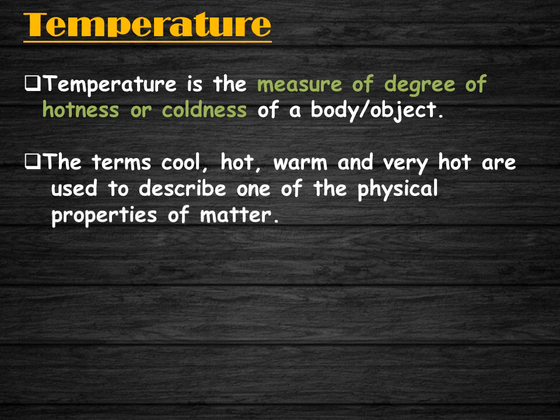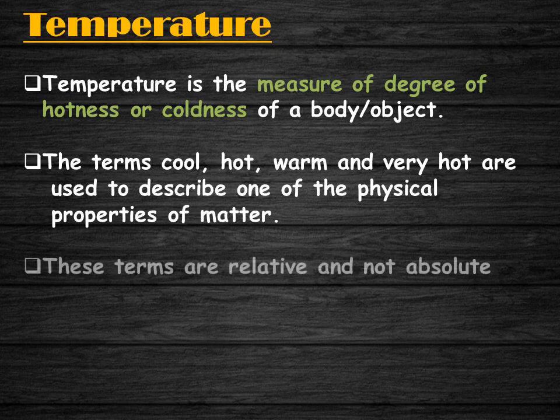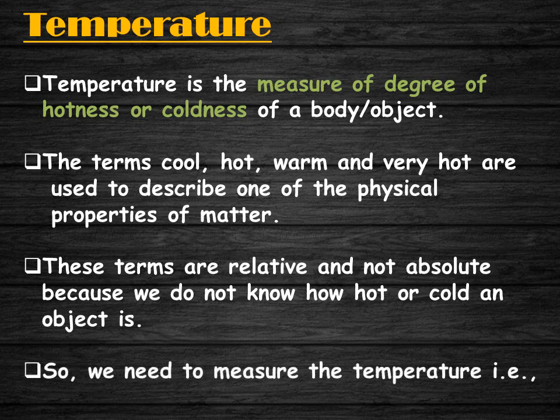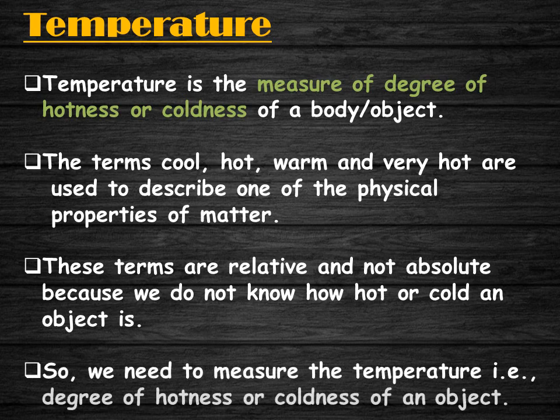The terms cool, hot, warm, and very hot are used to describe one of the physical properties of matter. These terms are relative and not absolute, because we do not know exactly how hot or cold an object is. So we need to measure the temperature — that is, the degree of hotness or coldness of an object.